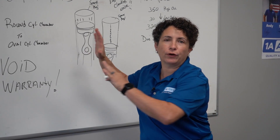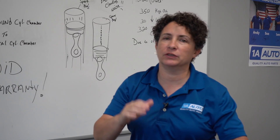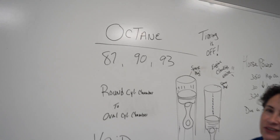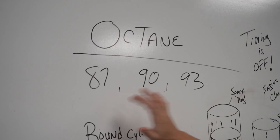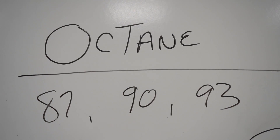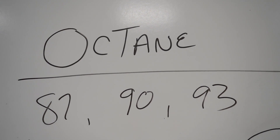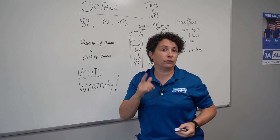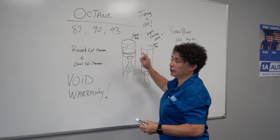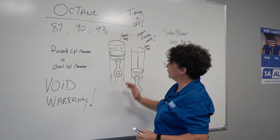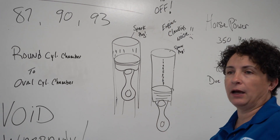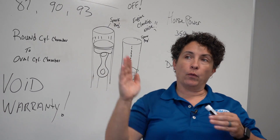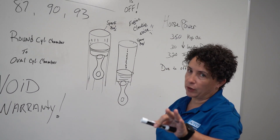We're going to do it on the board here to explain it so it makes a little bit more sense. So octane — you've got your three major octanes, this is what you see at all the gas stations: 87, 90, and 93 octane. Octane is a compression ratio. Your cylinder has compression, that's what gives it the power because it ignites, the piston goes up, pushes back down and there's an explosion — crank turns and away you go.